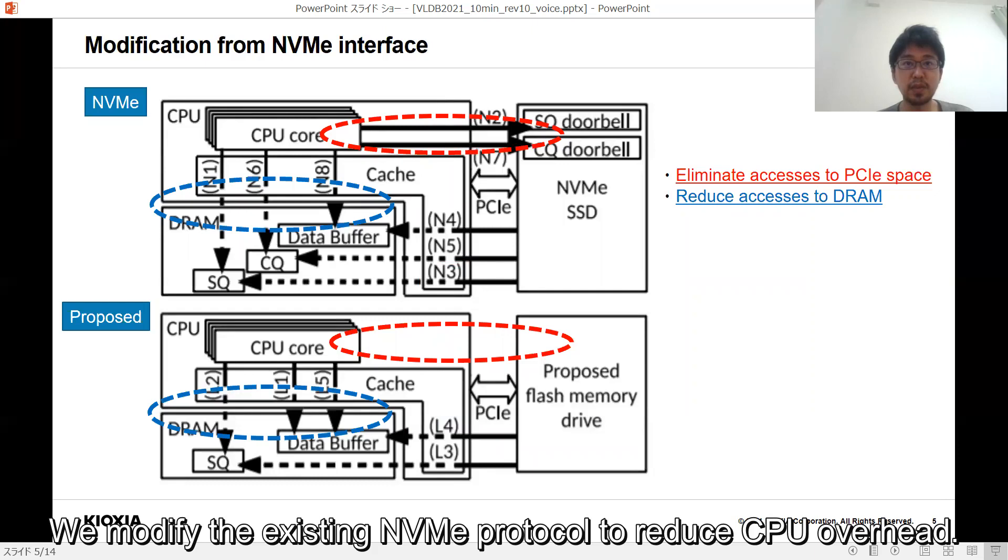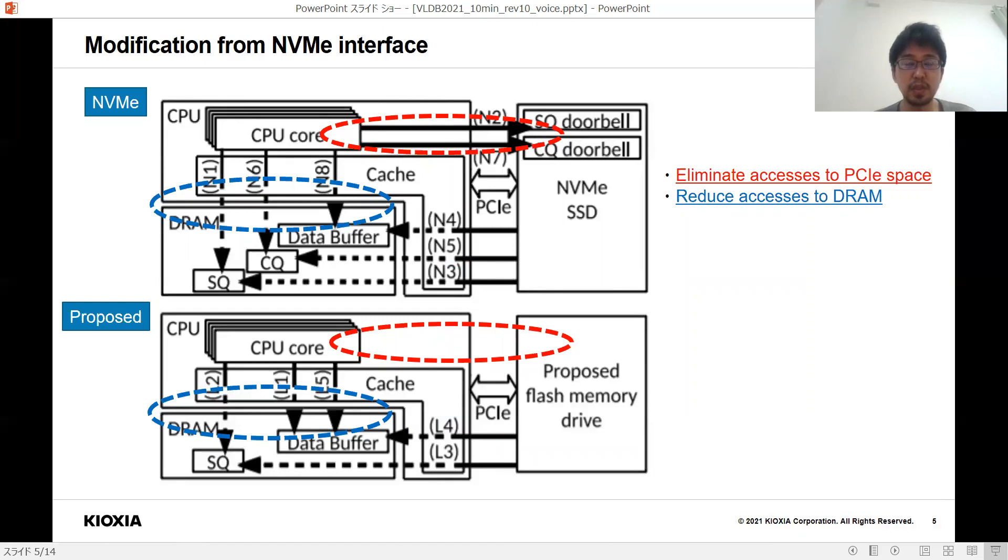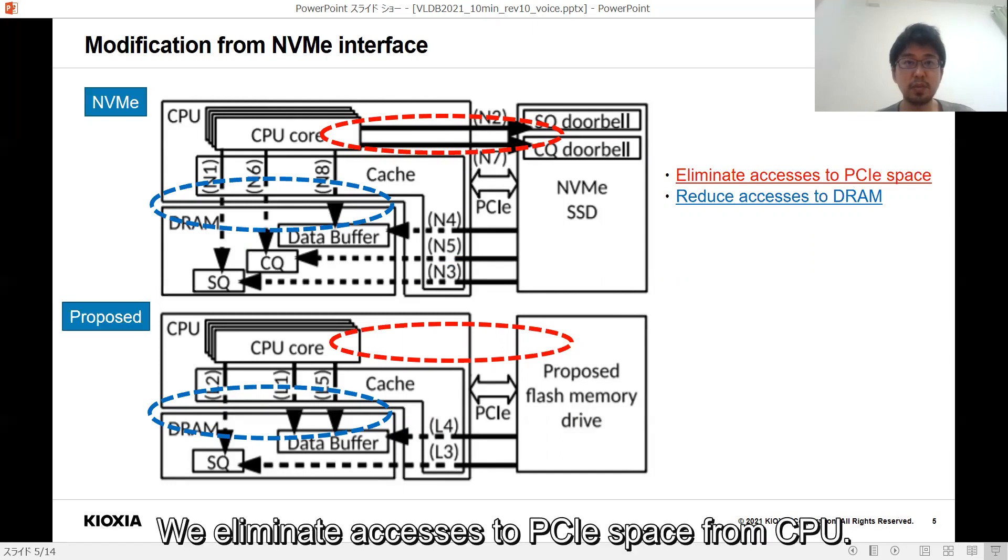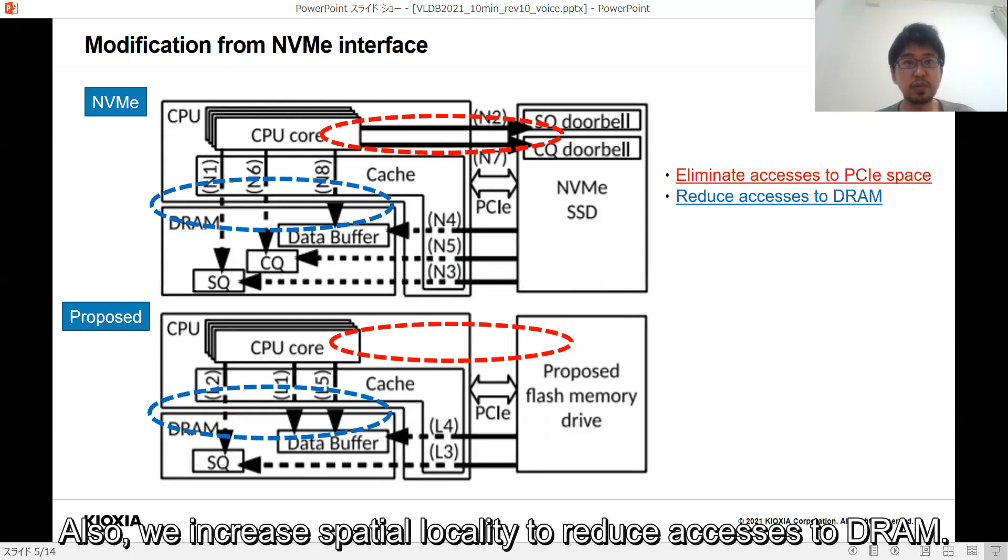We modify the existing NVMe protocol to reduce CPU overhead. These are data flow diagrams of NVMe protocol and proposed one. We eliminate accesses to PCI space from CPU. Also, we increase spatial locality to reduce accesses to DRAM.